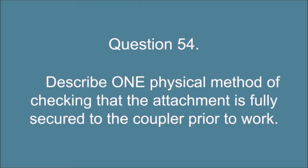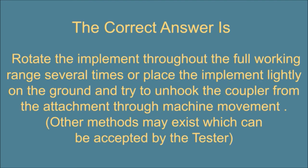Question 54. Describe one physical method of checking that the attachment is fully secured to the coupler prior to work. The correct answer is: Rotate the implement throughout the full working range several times or place the implement lightly on the ground and try to unhook the coupler from the attachment through machine movement. Other methods may exist which can be accepted by the tester.